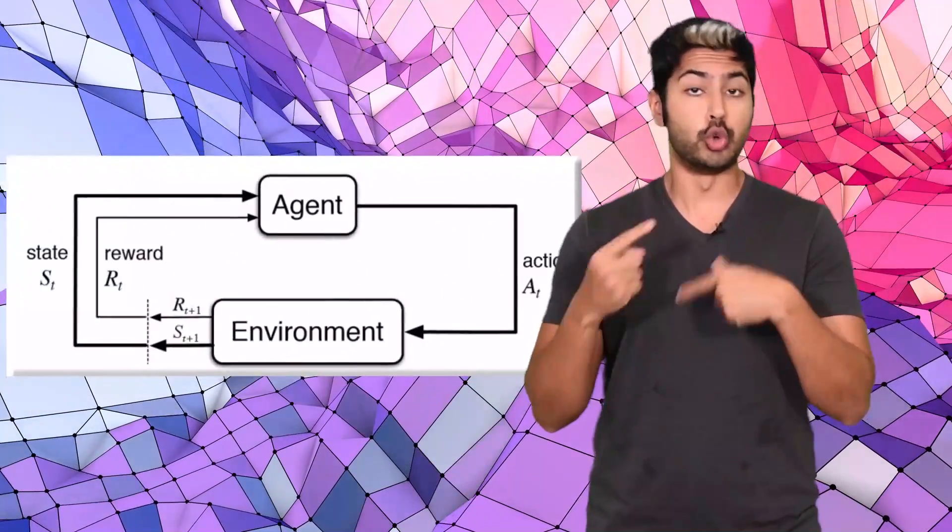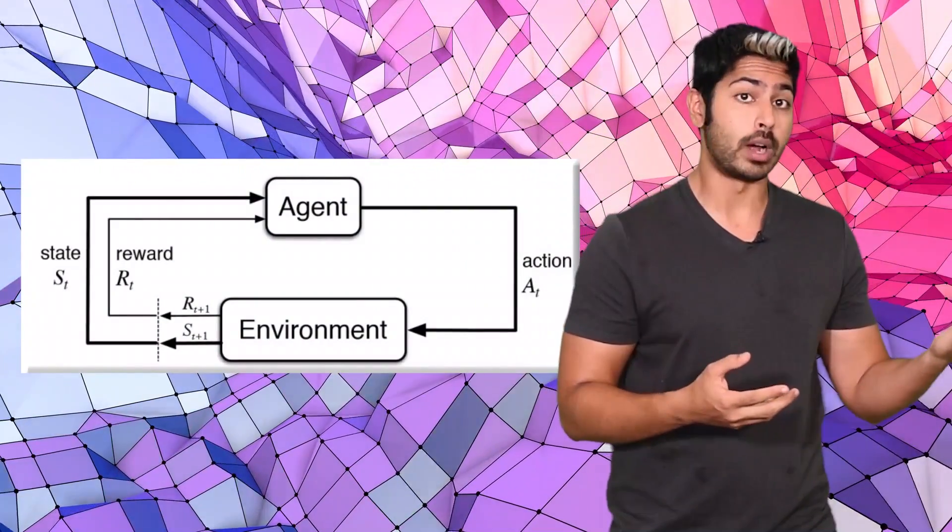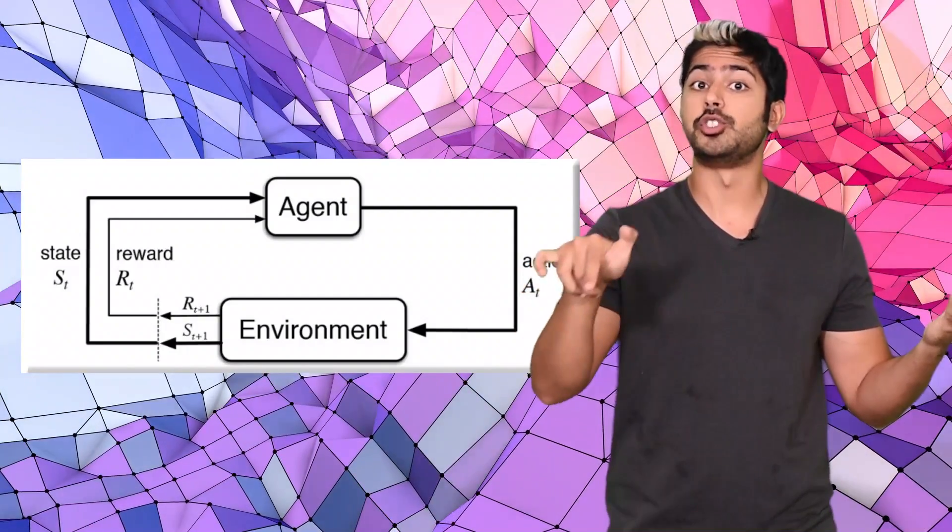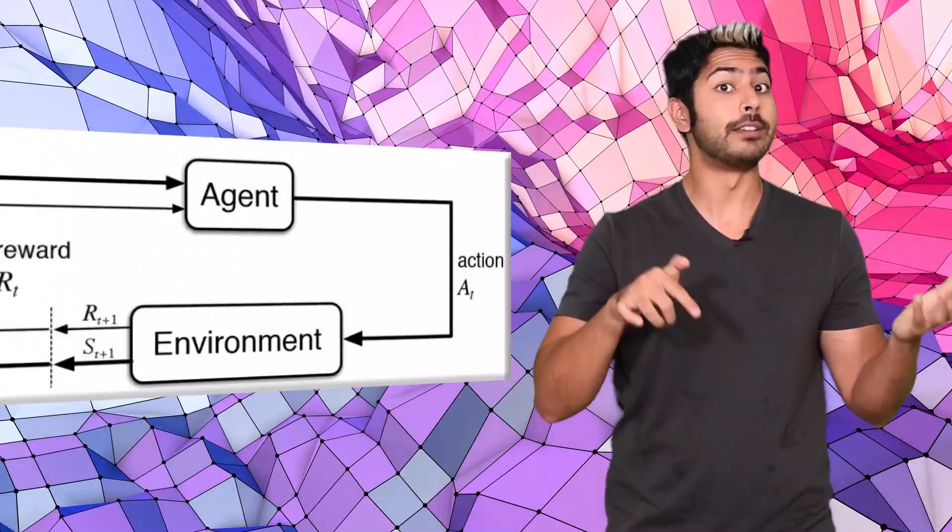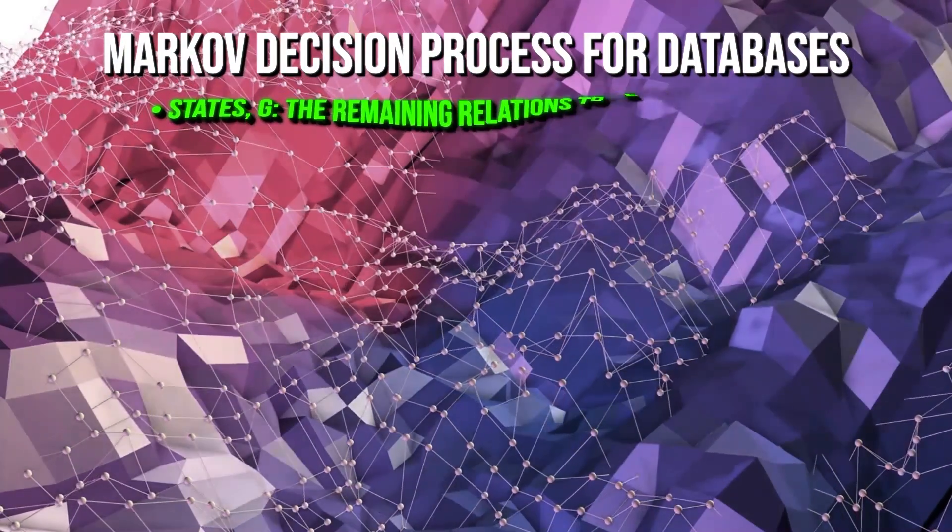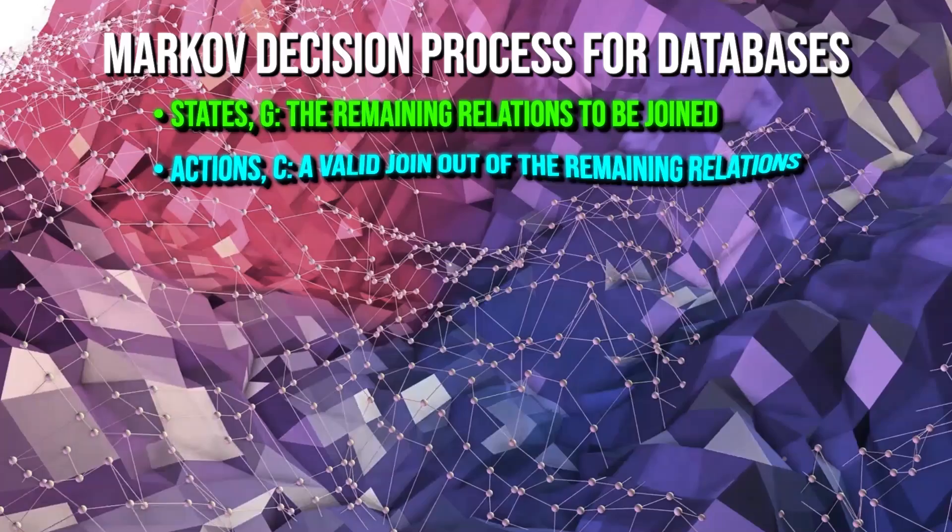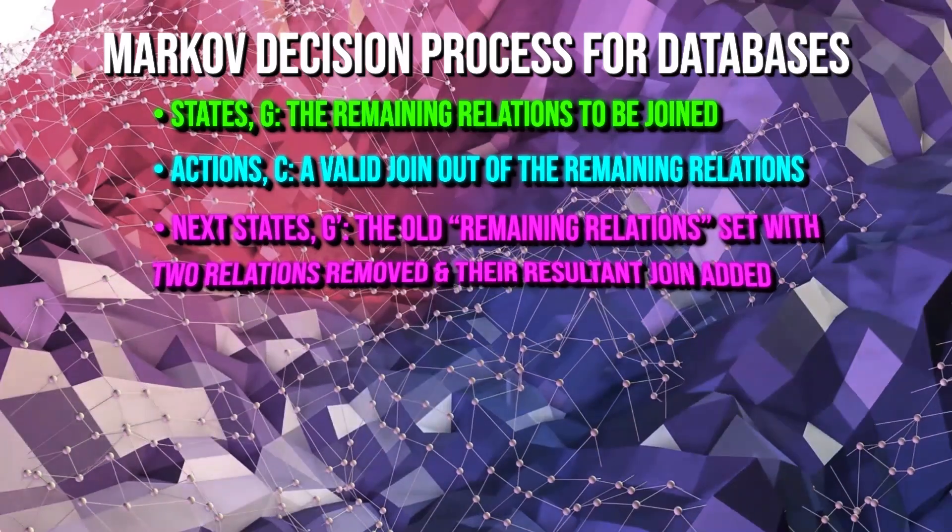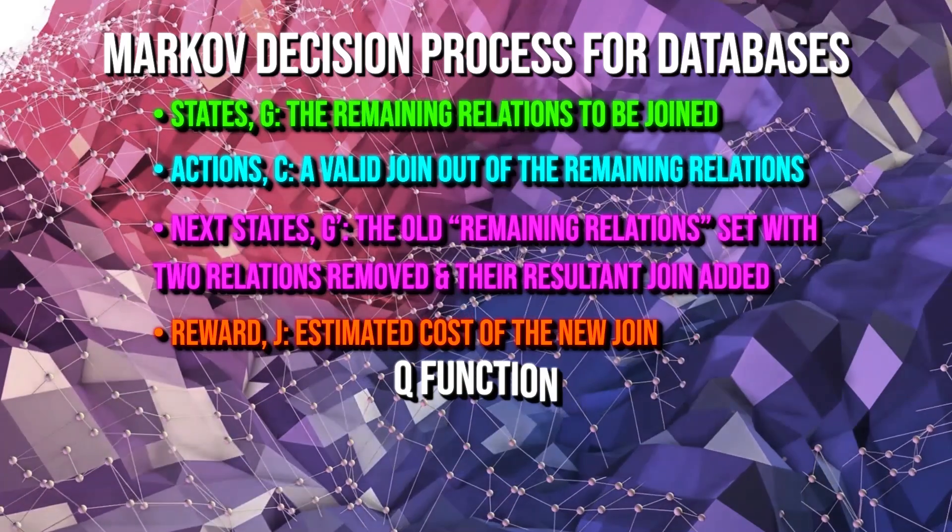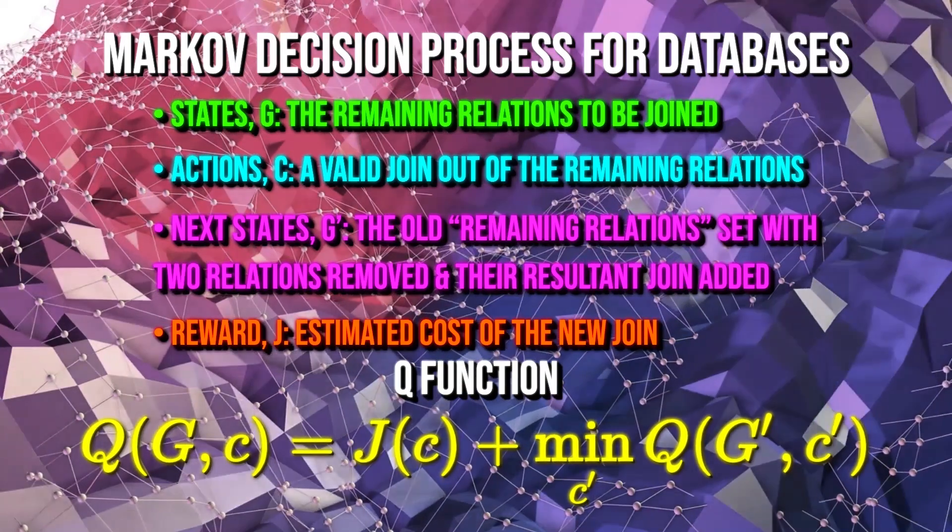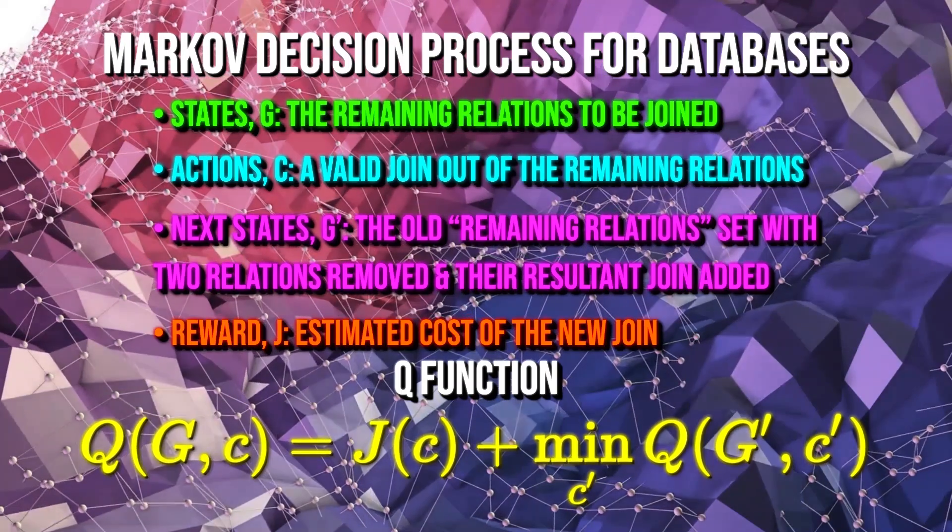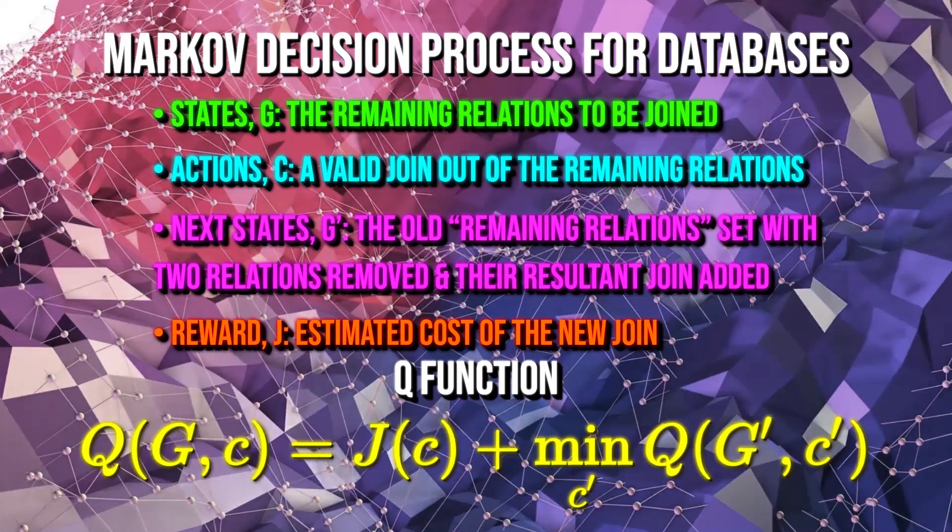Instead of solving this join ordering problem using dynamic programming, what if we formulated this problem as a Markov decision process and solved it using reinforcement learning? If we do that, the states can be considered the remaining relations to be joined. The actions would be the valid joins out of the remaining relations. The next states would be the old remaining relations set with two relations removed and the resultant join added. Lastly, the reward would be the estimated cost of the new join.